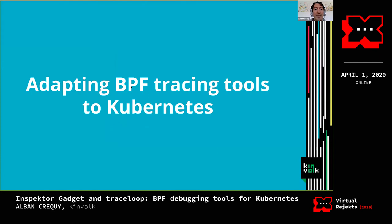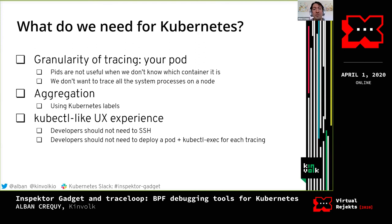That was an example on the command line, but I want to adapt that to the Kubernetes world. We want to focus on pods, not on specific process IDs or specific nodes. We want to use Kubernetes native concepts like labels to address different pods, not by PID on a node. The user experience should be close to kubectl. I don't want developers to SSH onto nodes or manually deploy pods and kubectl exec for each tracing — it should be a kubectl-like experience offered to developers.